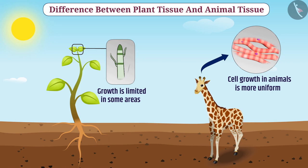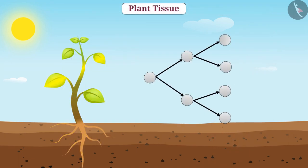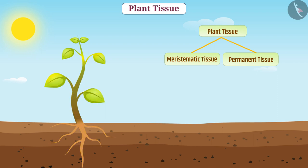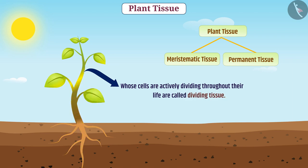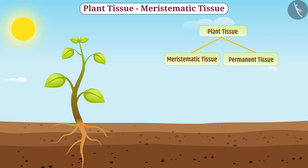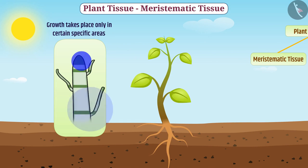Now let us understand plant tissue and meristem in detail. On the basis of division capacity of plant tissue, plant tissues are classified into meristematic tissue and permanent tissue. The tissues of plants whose cells are actively dividing throughout their life are called dividing tissue, also called meristematic tissue. In plants, meristematic tissues are found in certain specific areas, so plant growth takes place only in certain specific areas. The function of meristematic tissue is to grow plants.